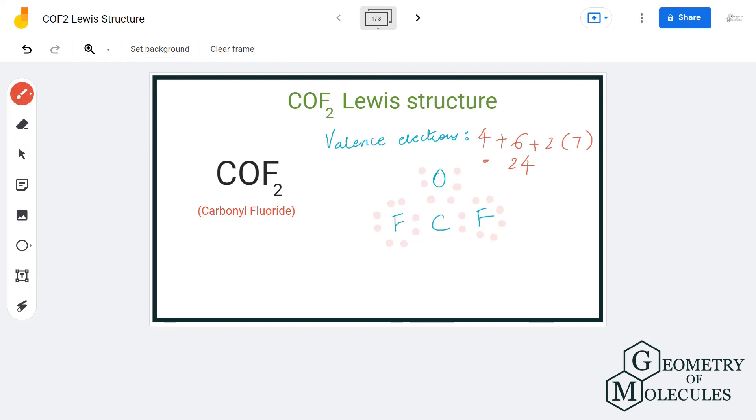This way, both oxygen and carbon will have complete octets. And now this is the Lewis structure of COF2, in which there is a double bond formed between carbon and oxygen atoms, and there are two single bonds with fluorine atoms.